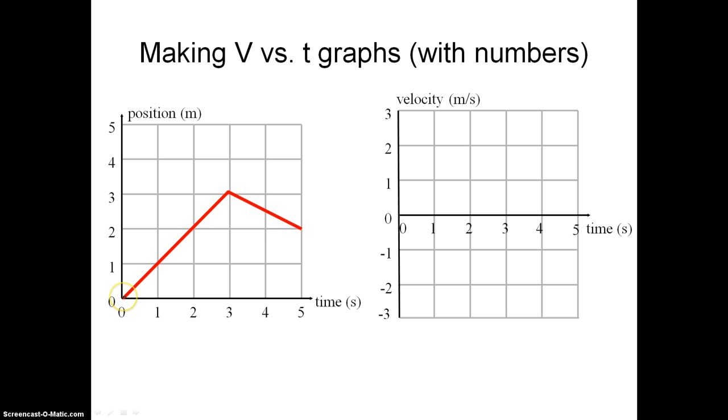So we can see just by looking at the position versus time graph, the object at time 0 starts at a position of 0 at origin, and it's moving away from the origin at a constant speed. And we know that it's moving at a constant speed or a constant velocity because the slope doesn't change for those first 3 seconds.